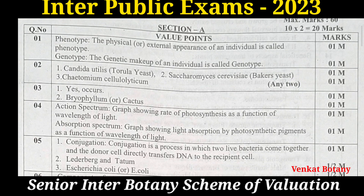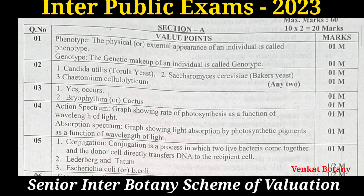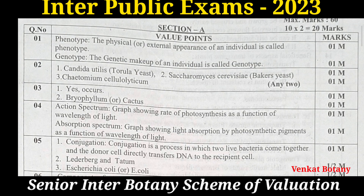The fourth question: Distinguish between action spectrum and absorption spectrum. Action spectrum is a graph which shows the rate of photosynthesis as a function of wavelength of light. Absorption spectrum is a graph showing light absorption by photosynthetic pigments as a function of wavelength of light.